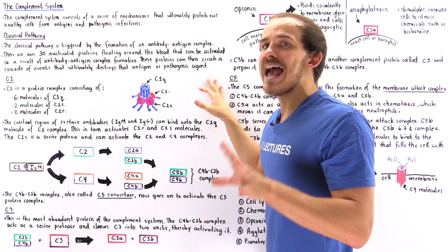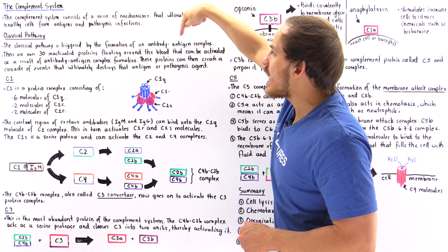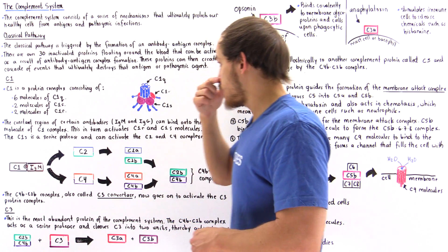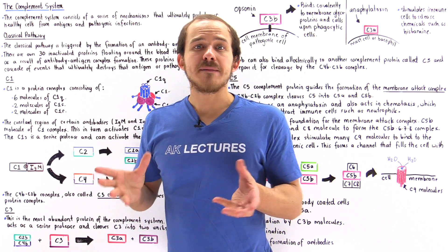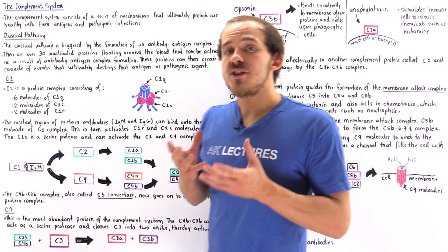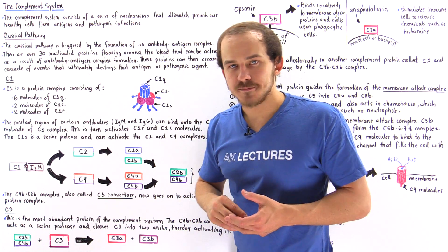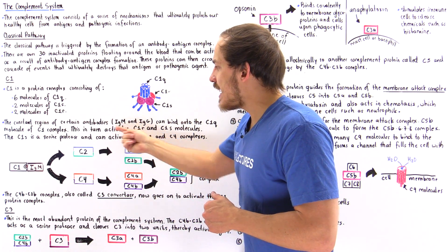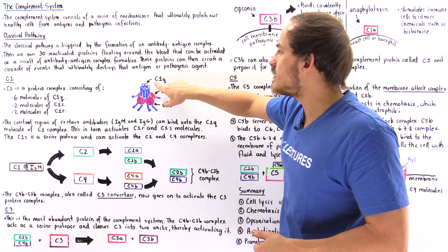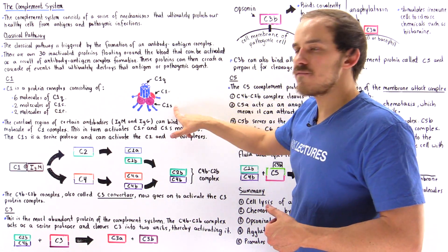We have five different types of antibodies — five different types of immunoglobulins — in our body. Two of these immunoglobulins that are capable of binding to the C1 complex are immunoglobulin M and immunoglobulin G. So, suppose immunoglobulin M, this antibody, finds its complementary antigen, binds to it, and then that complex binds onto the C1q portion of C1. That then activates C1r, and then that activates C1s.